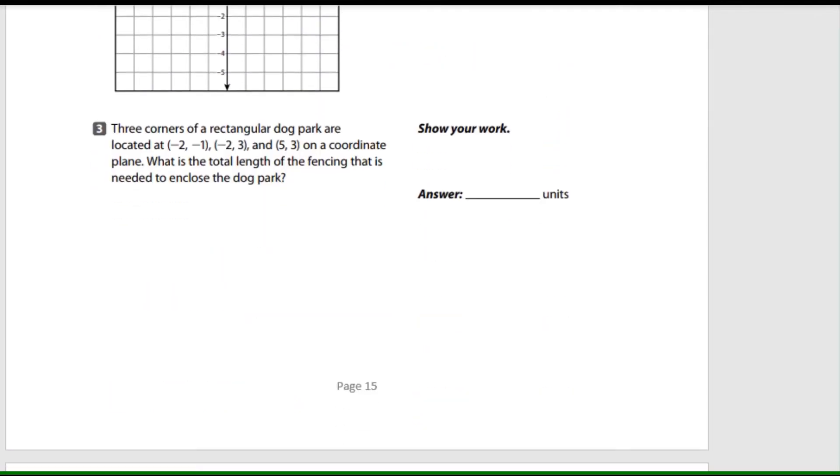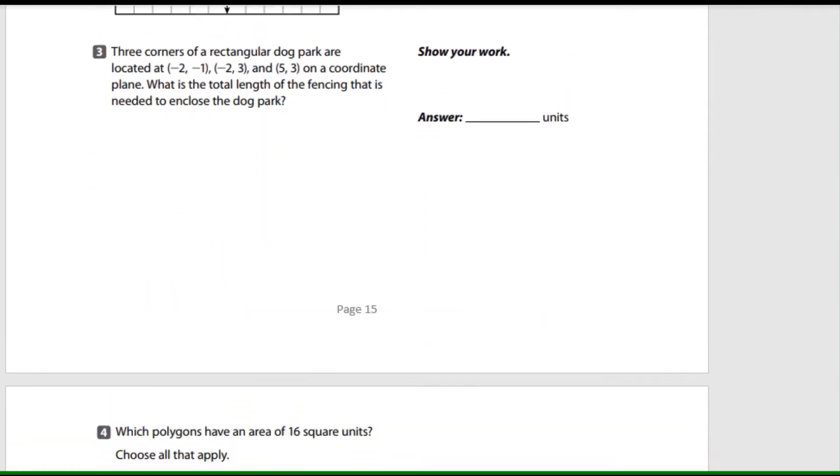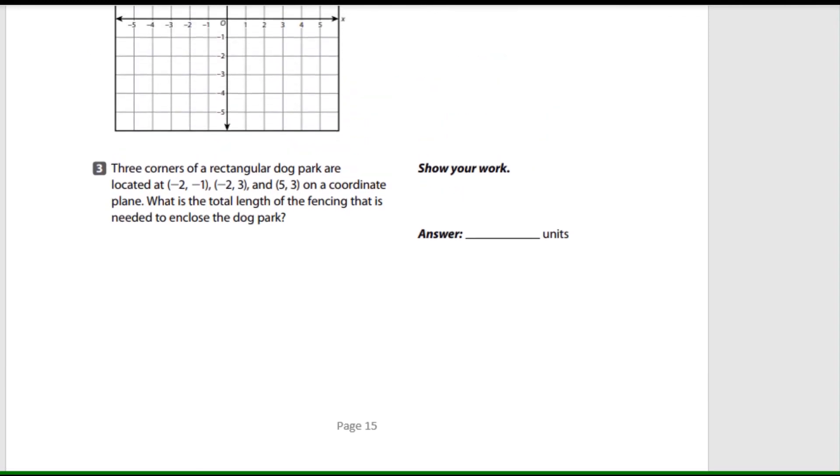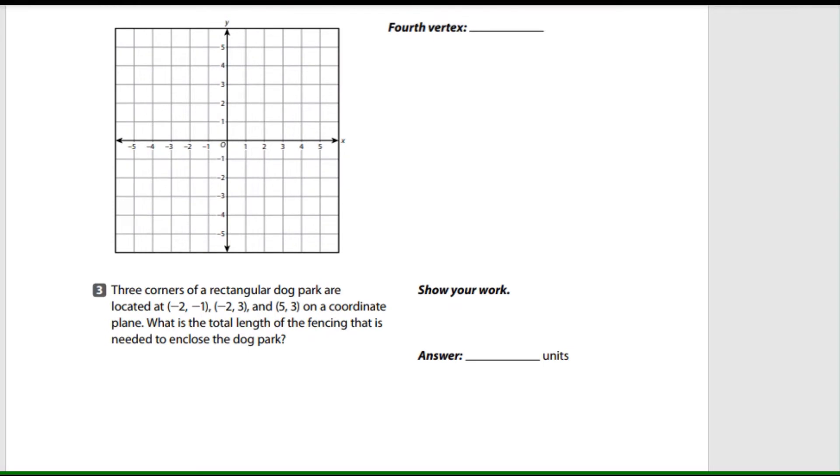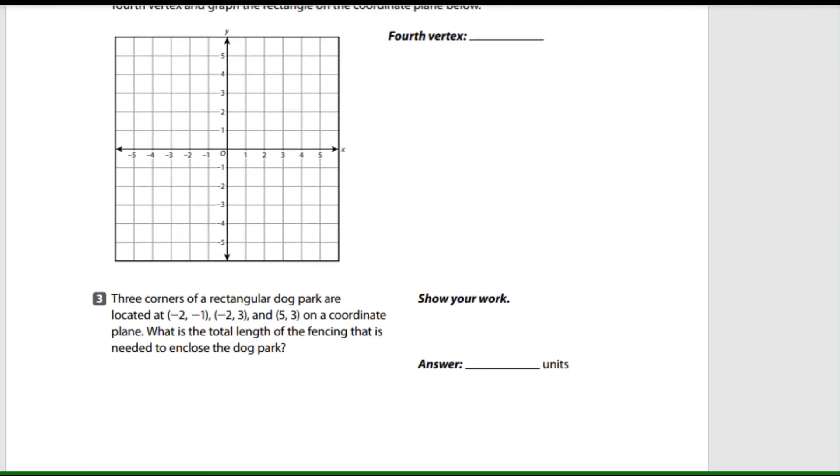These are too easy. Alright, moving on to the next question. The corners of a rectangular dog park are located at negative two, one, and then we have another coordinate and another coordinate. On the coordinate plane, what is the total length of the fencing that is needed to enclose the dog park?